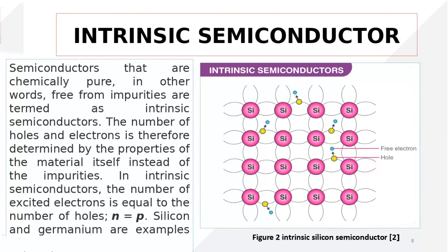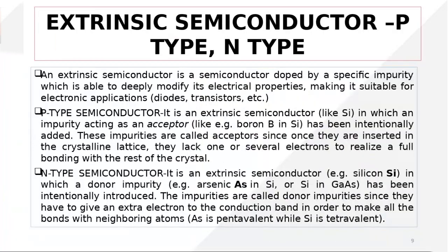This is a key difference between intrinsic and extrinsic semiconductors. In extrinsic semiconductors you have more holes or more electrons depending on which type of impurity you add. But in intrinsic semiconductors there is no impurity, so if you give any energy or apply any electric field or voltage, the number of holes in the valence band equals the number of electrons in the conduction band.